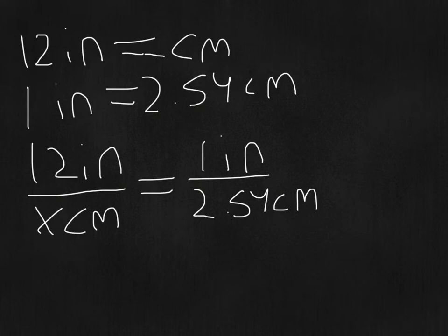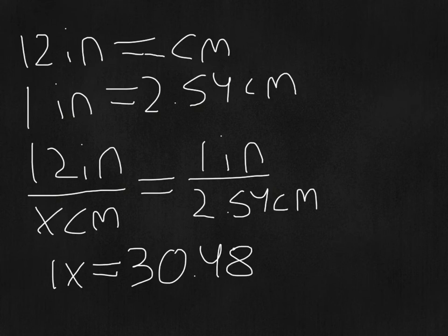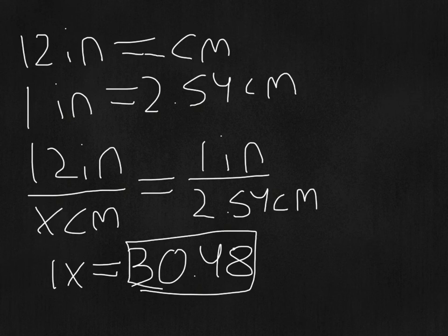Now the next step is to cross multiply. So you get 1x is equal to 12 times 2.54, which comes out to exactly 30.48. So the answer to the question would be that 12 inches are equal to 30.48 centimeters.